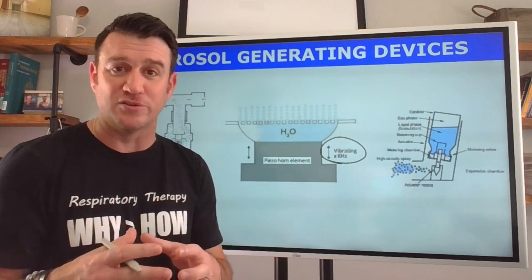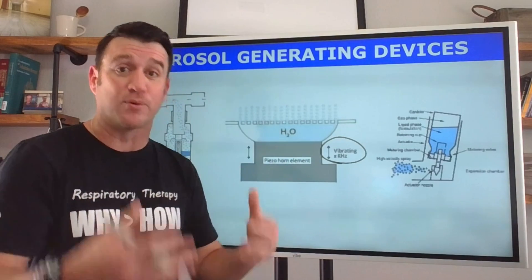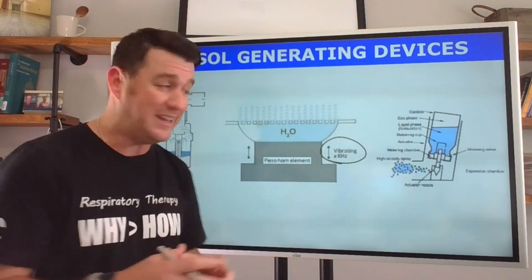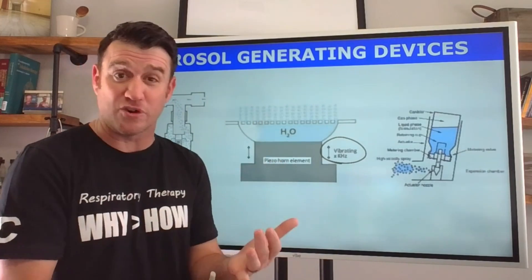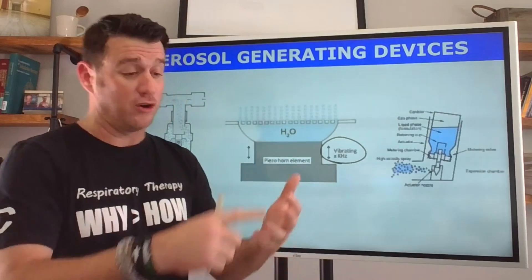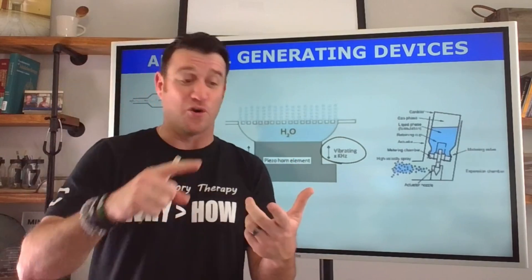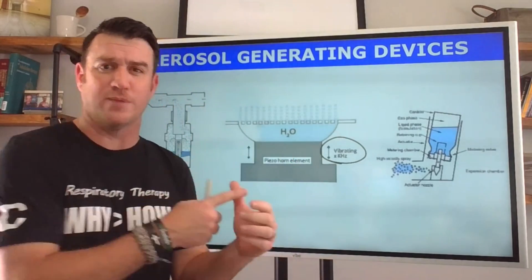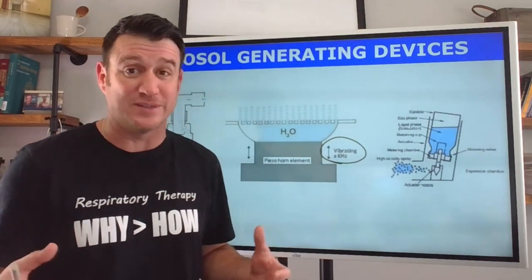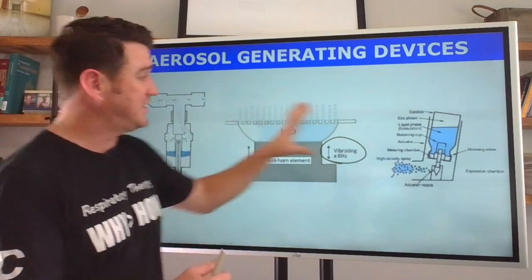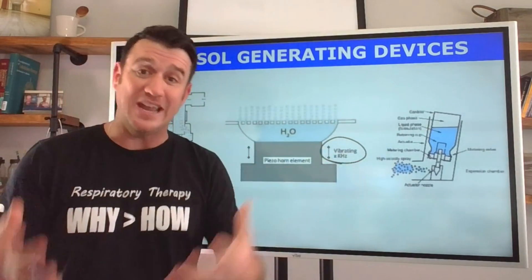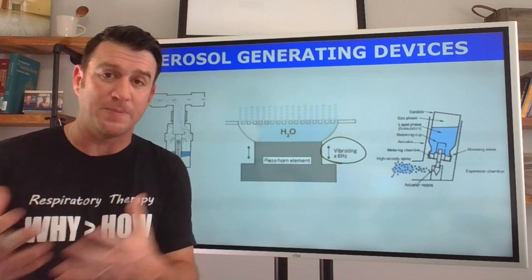All of these take liquid and turn it into aerosol, fine particles that we are breathing in so we can get these particles, this medication, from these devices. Whether it's albuterol, ipratropium bromide, an inhaled corticosteroid, a mucoactive agent, or maybe even some type of pulmonary vasodilator such as Flolan, you're using some type of device to take that medication from liquid form to aerosol form.